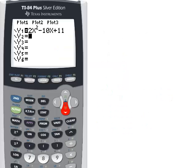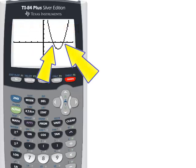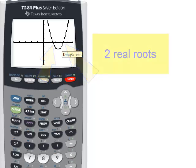I typed our quadratic equation into my graphing calculator, and sure enough, when I graph it, my parabola does cross in two places. I have two real roots.